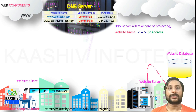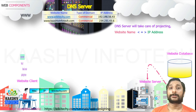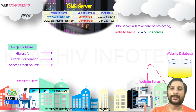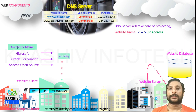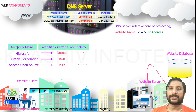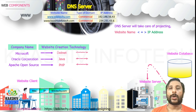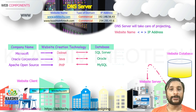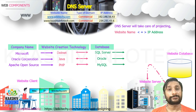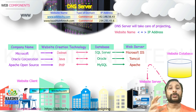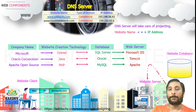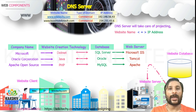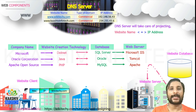Now let's talk about the technology behind web components and web designing. The major companies playing this role are Microsoft, Oracle Corporation, and Apache (open source). They create website technologies: .NET, Java, and PHP. The corresponding databases are SQL Server, Oracle, and MySQL. To host and process websites we need web servers: for Microsoft it's IIS, for Java it's Tomcat, and for PHP it's Apache. Note that .NET is not limited to SQL Server — it can talk to other databases too.